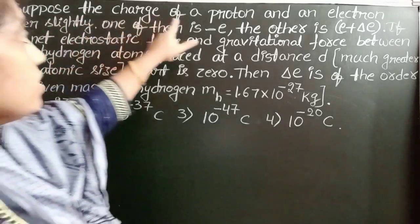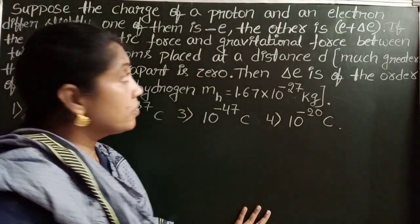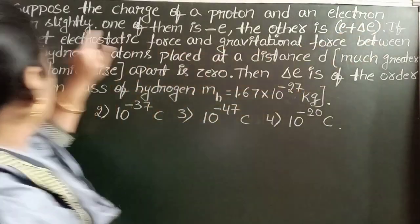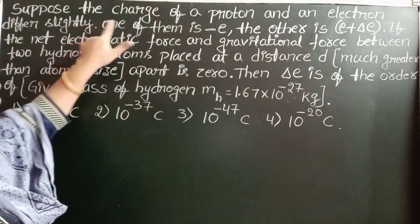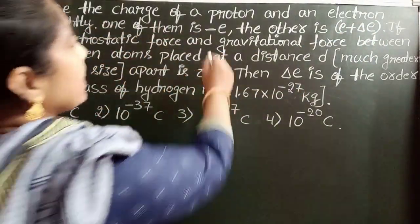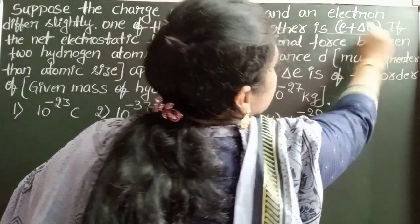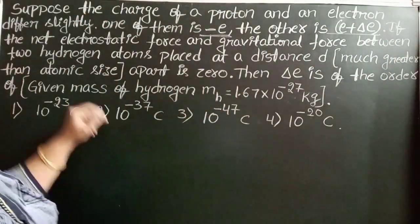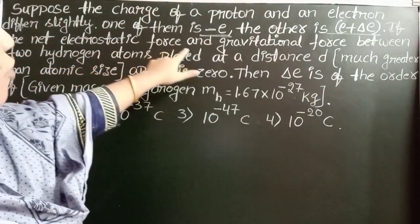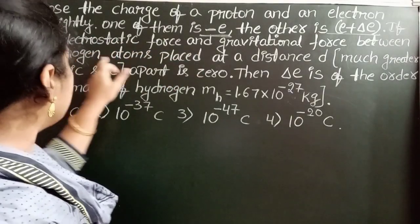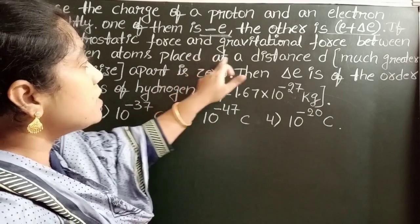Suppose the charge of a proton and an electron differs slightly, one of them is minus E, the other is E plus delta E. If the net electrostatic force and gravitational force between two hydrogen atoms placed at a distance d much greater than atomic size is zero, then delta E is of the order of...